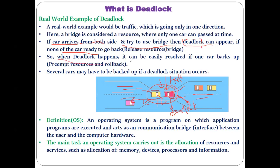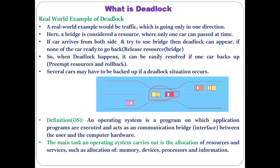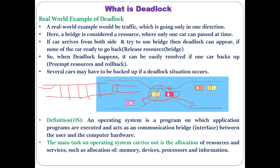When deadlock happens it can be resolved — if one of the cars goes back some distance, meaning if one car rolls back and releases the resource, allowing the other to use the bridge. This is the real-life example of deadlock. Similarly, you can take the example of a railway track where there is only one track and trains are coming from both sides.